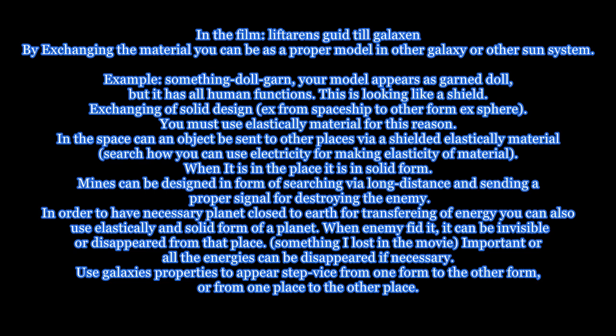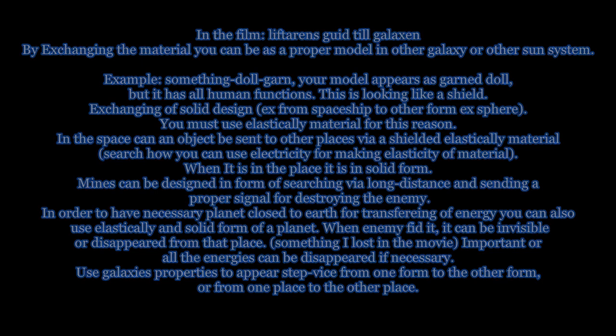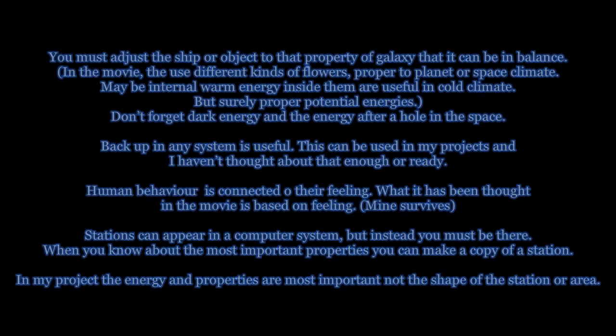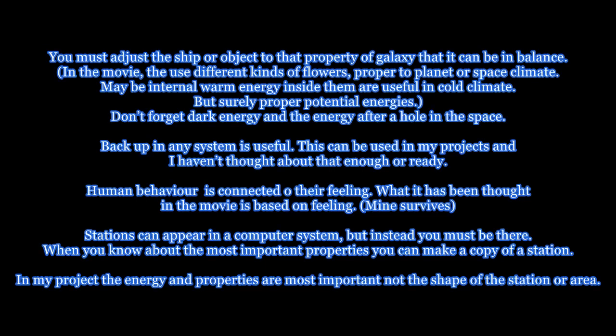You can also use elastic and solid form of a planet — when the enemy finds it, it can become invisible or disappear from that place. All energies can be disappeared if necessary. Use galaxy properties to appear things step by step, from one form to the other, or from one place to another. You must adjust the ship or object to that property of the galaxy so it can be in balance. Don't forget dark energy and the energy after a hole in the space.